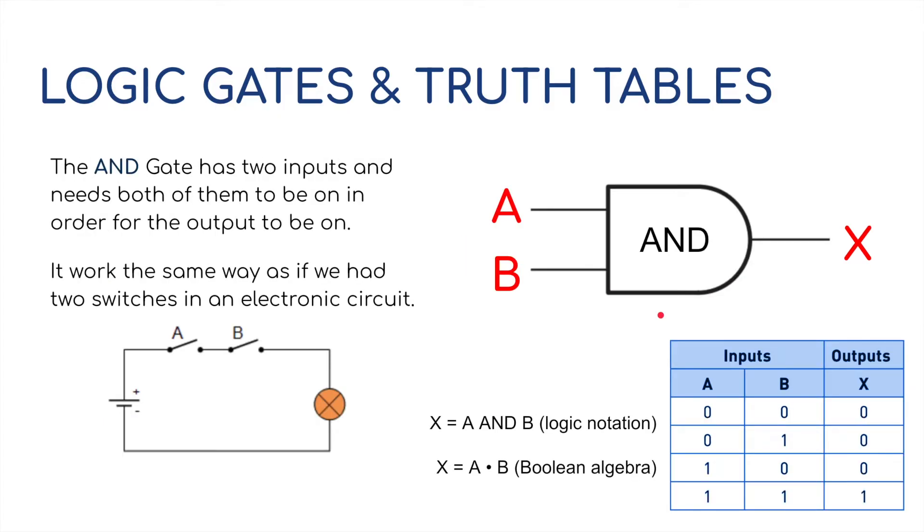The next gate I want to have a look at is the AND gate. The AND gate has two inputs, A and B, and needs both of them to be on in order for the output to be on as well. It works in a similar way as these switches in series here. We've got the battery in the circuit, and in order to get the light bulb to work, both switch A and switch B have got to be turned on.